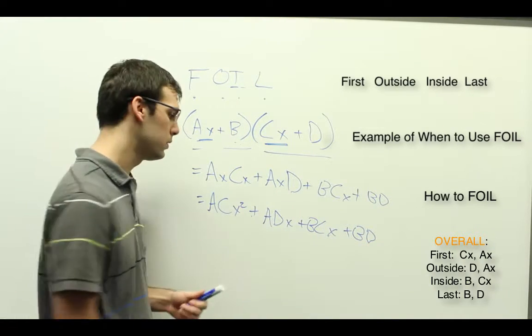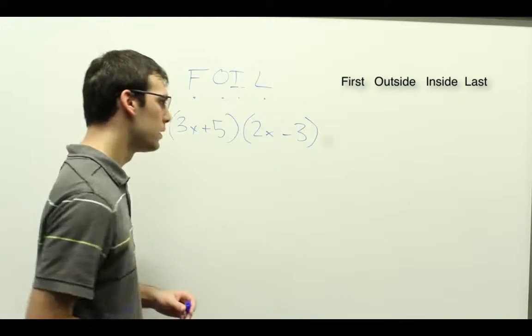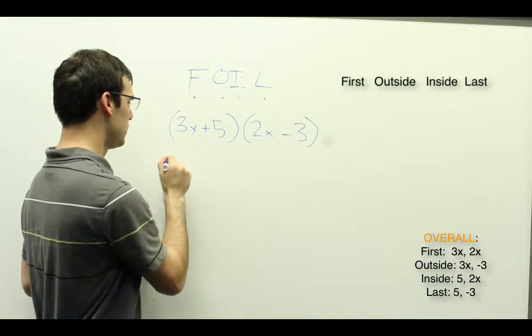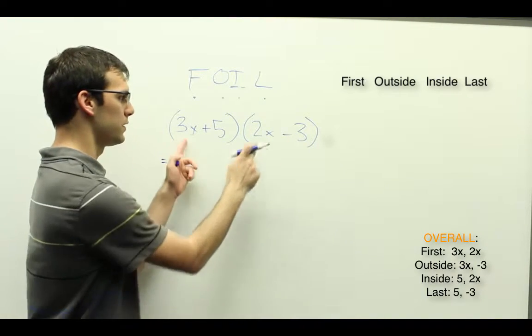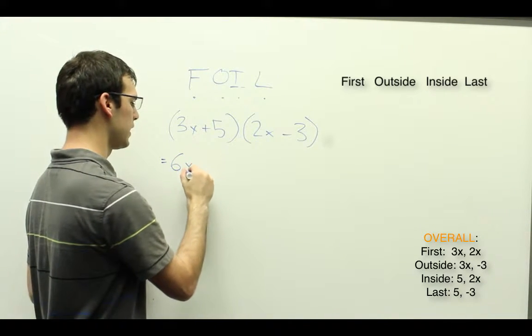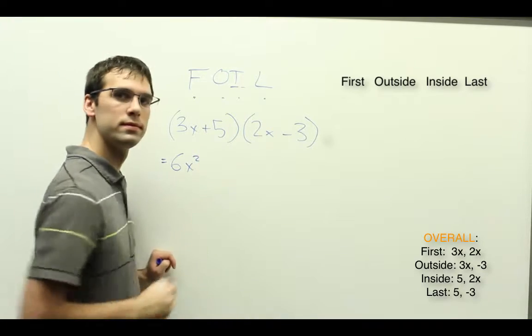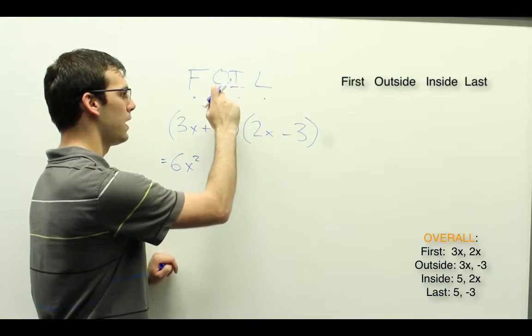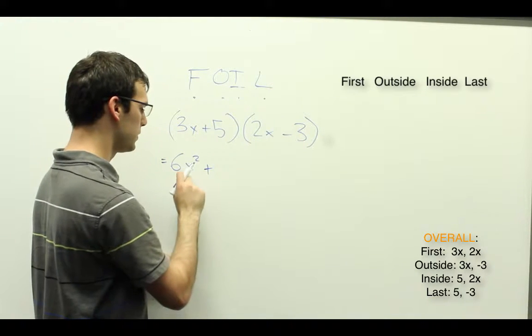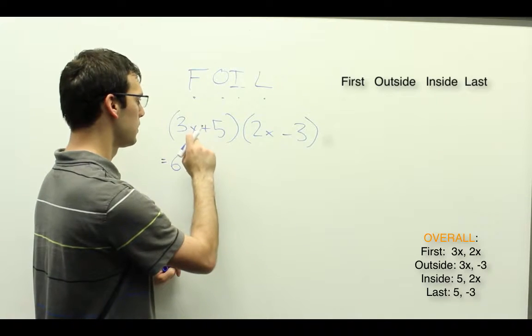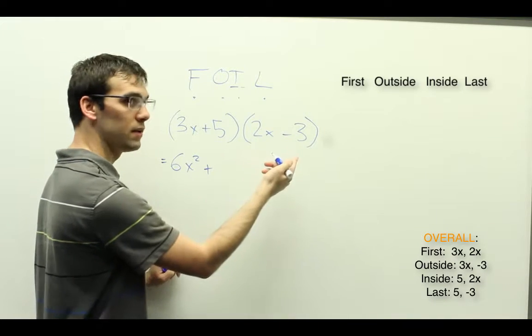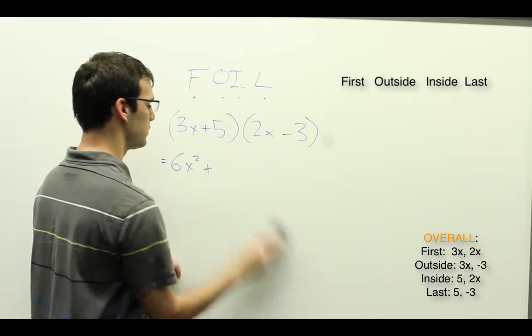So let's go ahead and do an actual example with numbers. If we want to find out what this is equal to, we start off by multiplying the first terms. So 3X times 2X, which is 6X squared. And then outside, 3X times negative 3, which gives us minus 9X.